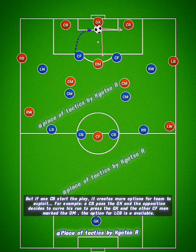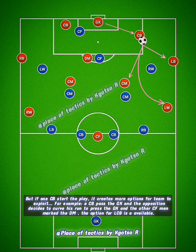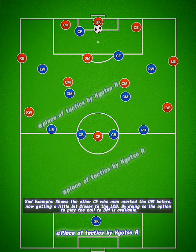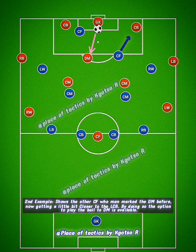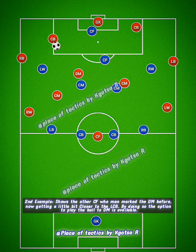Two examples of this are: if one of the forwards presses the goalkeeper, the ball carrier, and the other forward decides to sit on the pivot player, there is an opportunity to play into the left center back, who can then go and step into the space. And the second example shows the sitting forward getting a little bit closer to the left center back, and we actually find a little bit of space for the pivot player, who we can use as a bounce option for the goalkeeper to play directly into, and then out to the right center back.